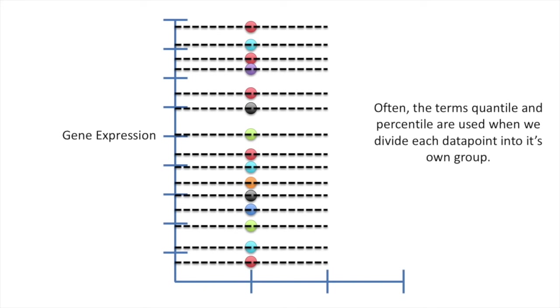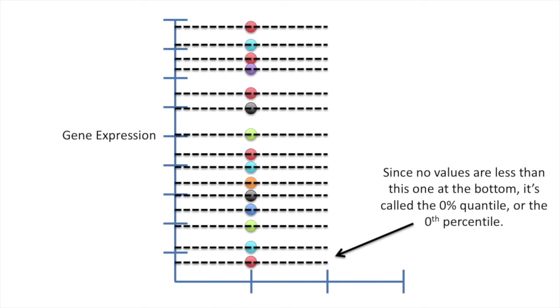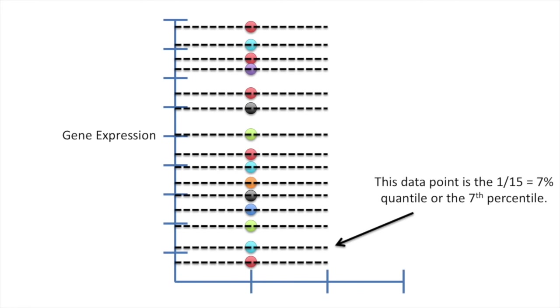Often, the terms quantile and percentile are used when we divide each data point into its own group. Since no values are less than this one at the bottom, it's called the 0% quantile or the 0th percentile. This data point is the 1 divided by 15 equals 7% quantile or the 7th percentile. I use 1 divided by 15 because there's one data point of the 15 that are less than it.